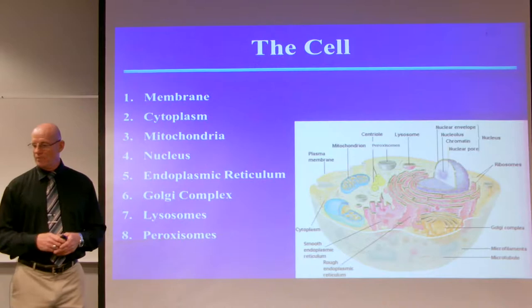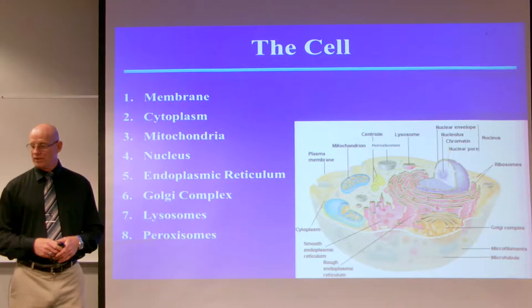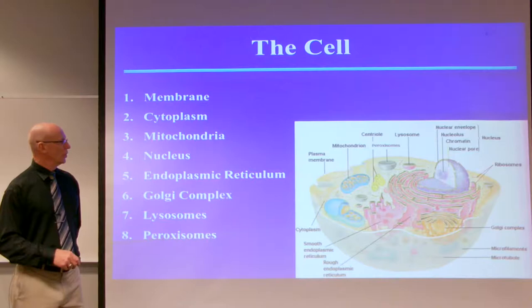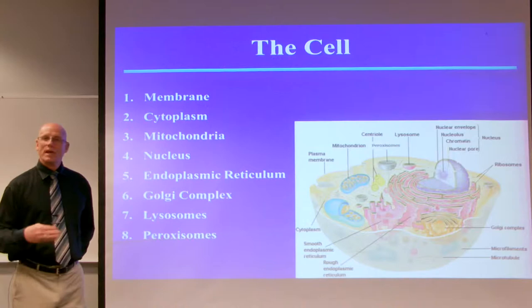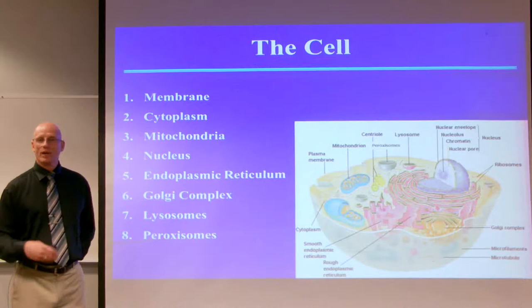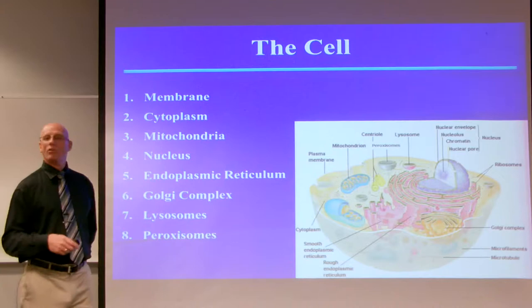For the cell, I'm going to cover the membrane, the cytoplasm, the mitochondria, the nucleus, the endoplasmic reticulum, the Golgi complex, lysosomes, and peroxisomes. The cell process starts in the nucleus — that's the center, where the DNA is held. We make proteins from that DNA for our body structures. It starts in the DNA, works out through the endoplasmic reticulum into the Golgi complex, and then leaves the cell through exocytosis.